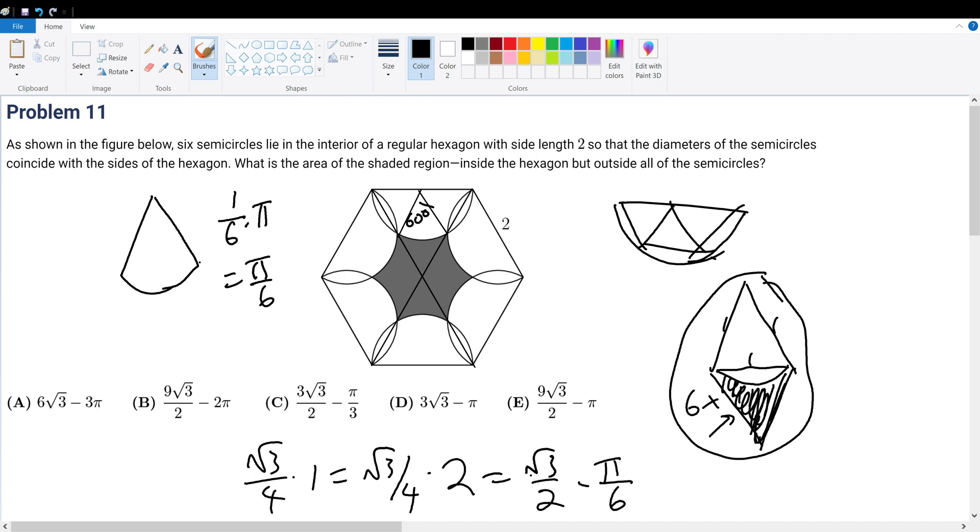And therefore, when we multiply this by 6, we'll get our answer. So we get 3 root 3 minus pi, bringing you to answer choice D.